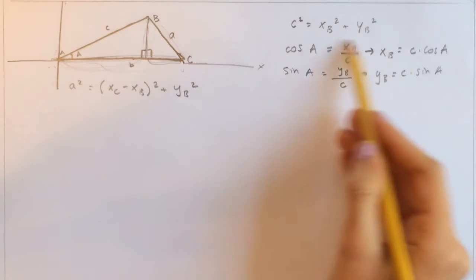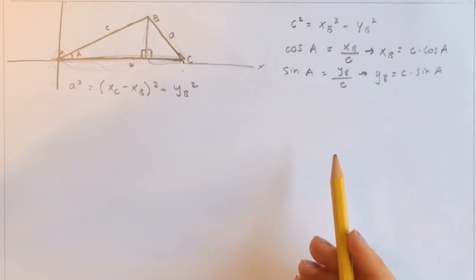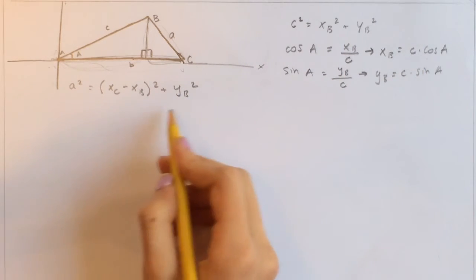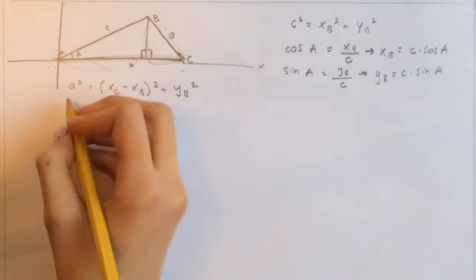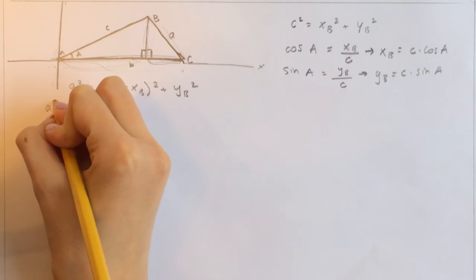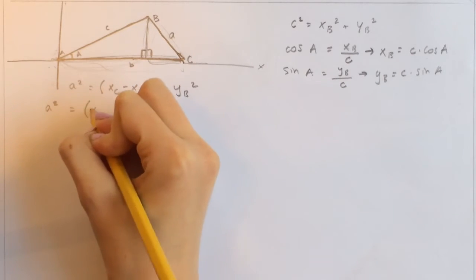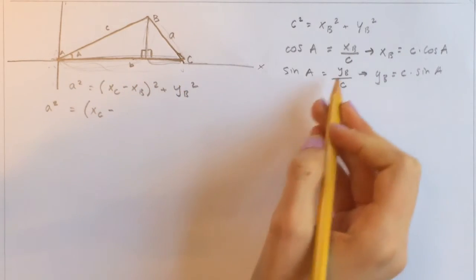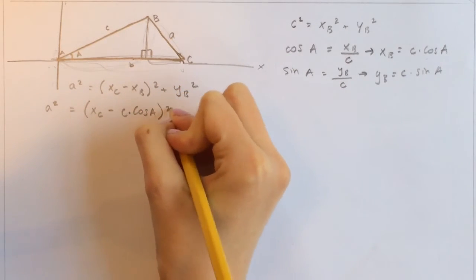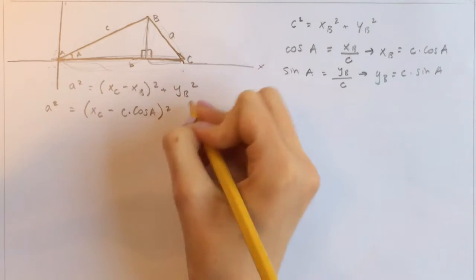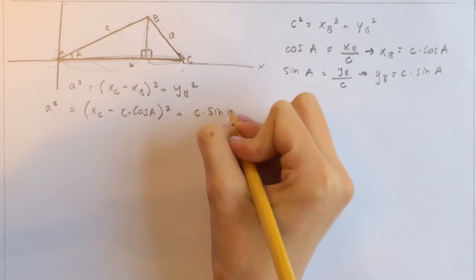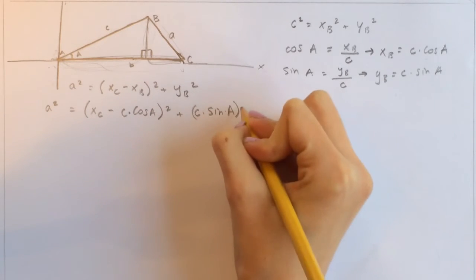We can go back to what we found: x of B is c times cosine of A, and y of B is c times sine of A. So let's substitute those in. Now a squared equals the quantity x of C minus c times cosine of A, all squared, plus the quantity c times sine of A, squared.